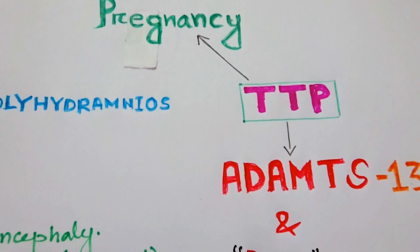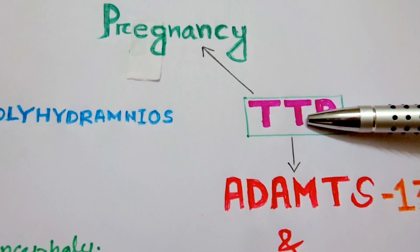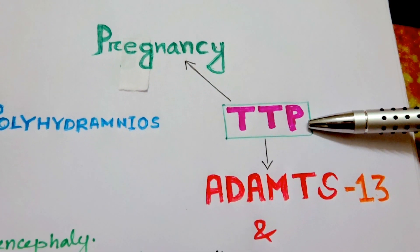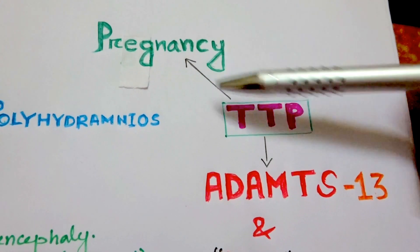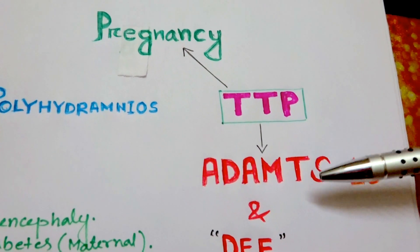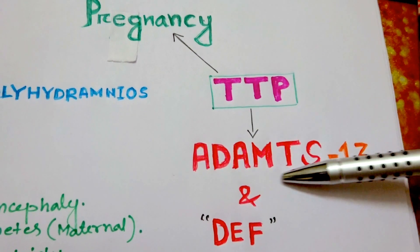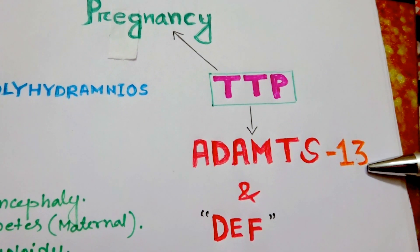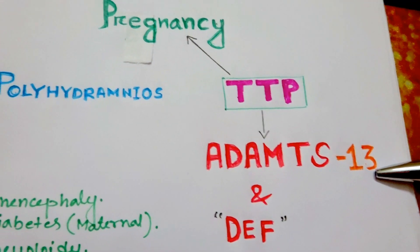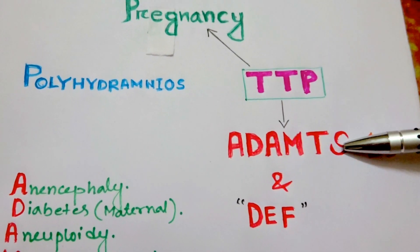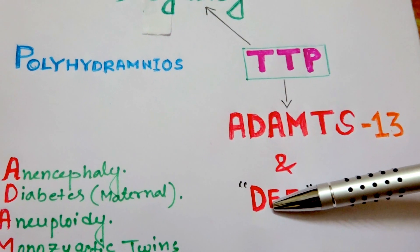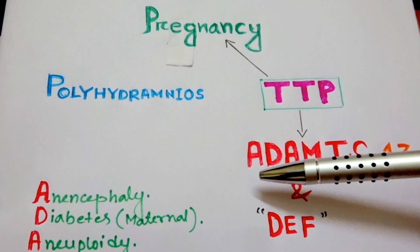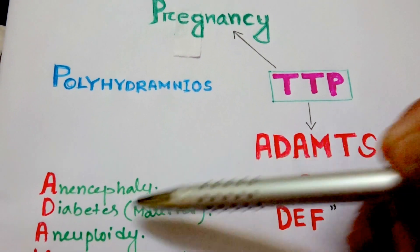Here we can see there is TTP, that is thrombotic thrombocytopenic purpura. Now it occurs in pregnancy and it is also due to the mutation of ADAMTS13 protein or metalloproteinase. So our mnemonic is ADAMTS and the serial letters that is DEF of alphabet.